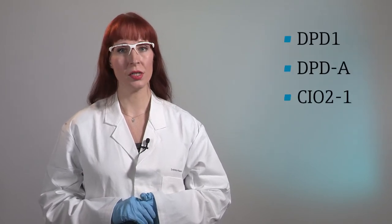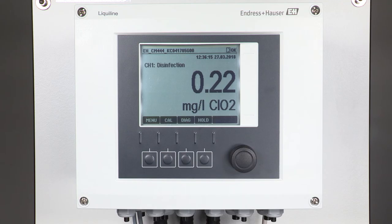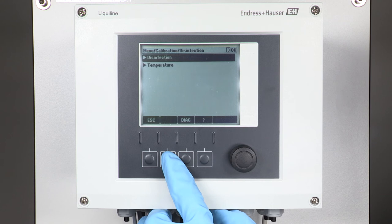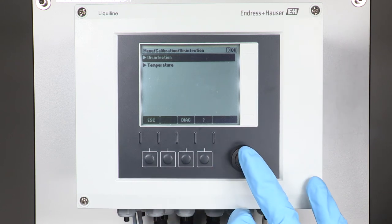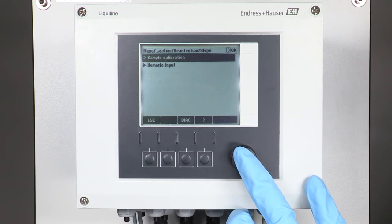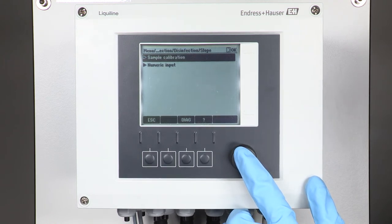Now we start with the calibration procedure. For the determination of Chlorine Dioxide we use a dedicated reagent. Depending on the manufacturer this may be called DPD1 or DPDA for example. First we start the calibration procedure at the liquid line transmitter. Therefore we press calibration, choose disinfection, then slope and come to sample calibration.